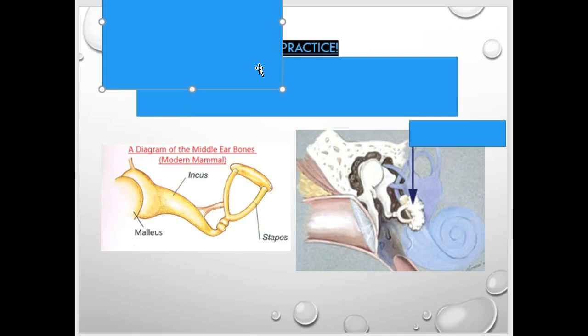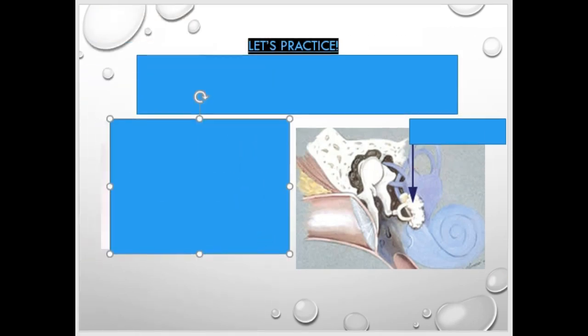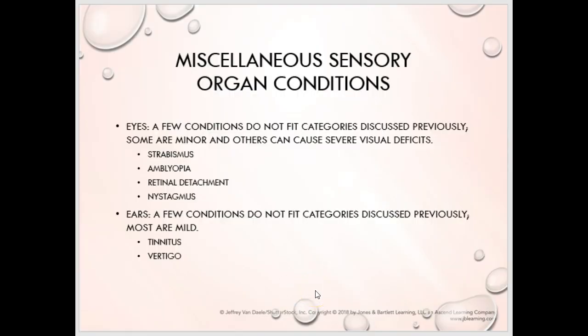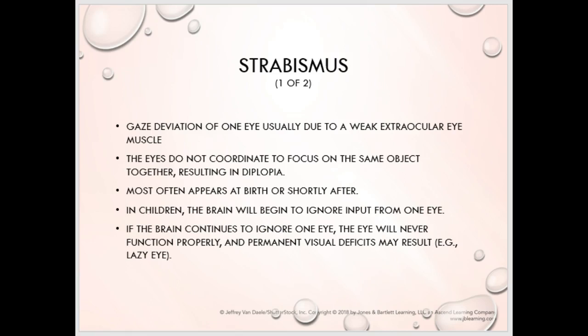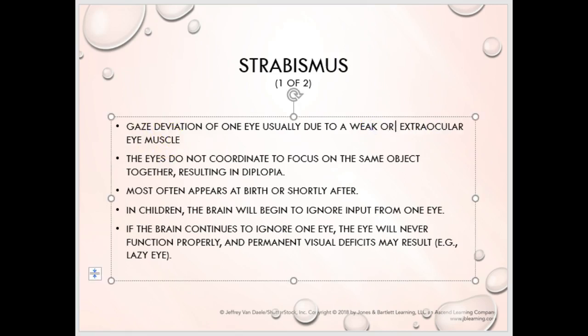We're going to talk about some other conditions: strabismus, amblyopia (also known as lazy eye), retinal detachment which is a medical emergency, nystagmus which is a horizontal beating of the eyes, tinnitus which is ringing or sound in the ear, and vertigo which is the sense of the room moving. Strabismus is a lateral or medial deviation of the eye — usually due to a weak or tight extraocular eye muscle.